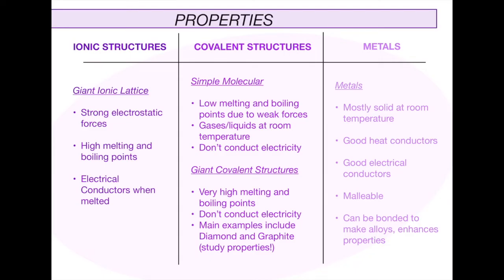For covalent structures we have two types: a simple molecular one and a giant covalent structure. Simple molecular structures have very weak covalent bonds — similar to ionic bonds on their own — so they have low melting and boiling points, are typically gases or liquids at room temperature, and the electrons are not free to move so they do not conduct electricity. Giant covalent structures collectively have many more covalent bonds, making melting and boiling points much higher. They also don't conduct electricity. Main examples of giant covalent structures are diamond and graphite — these are very common exam questions, so I'd recommend looking into those in your own time.